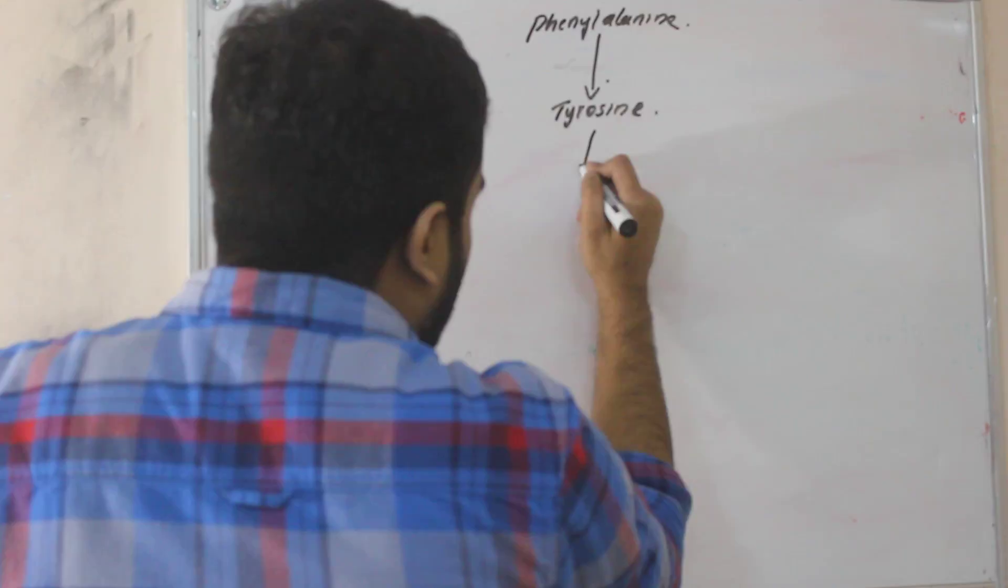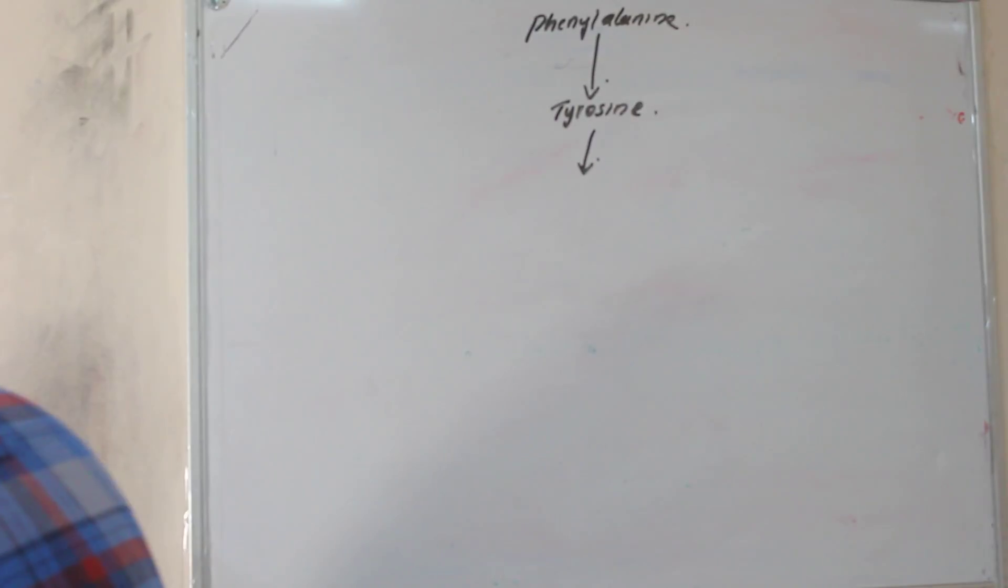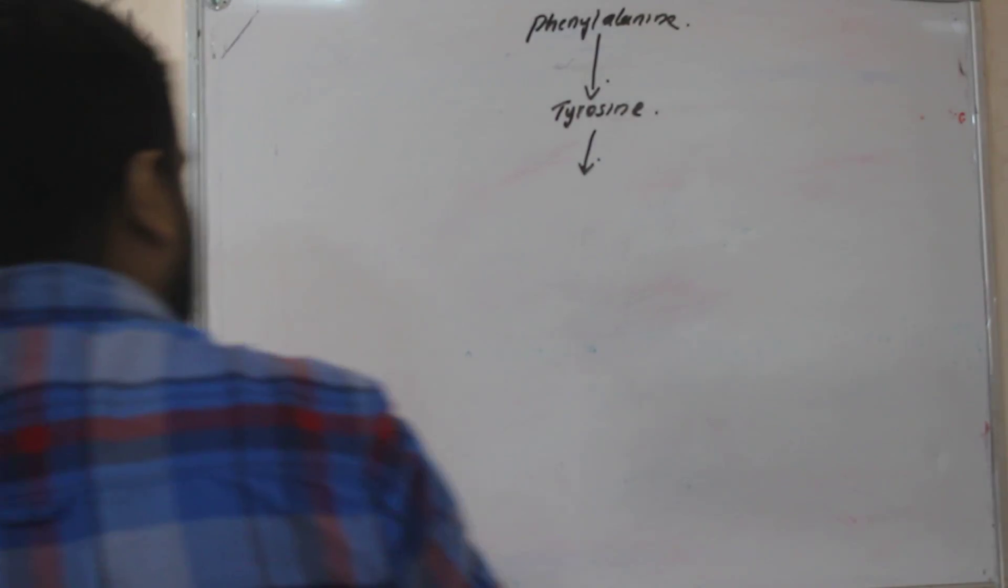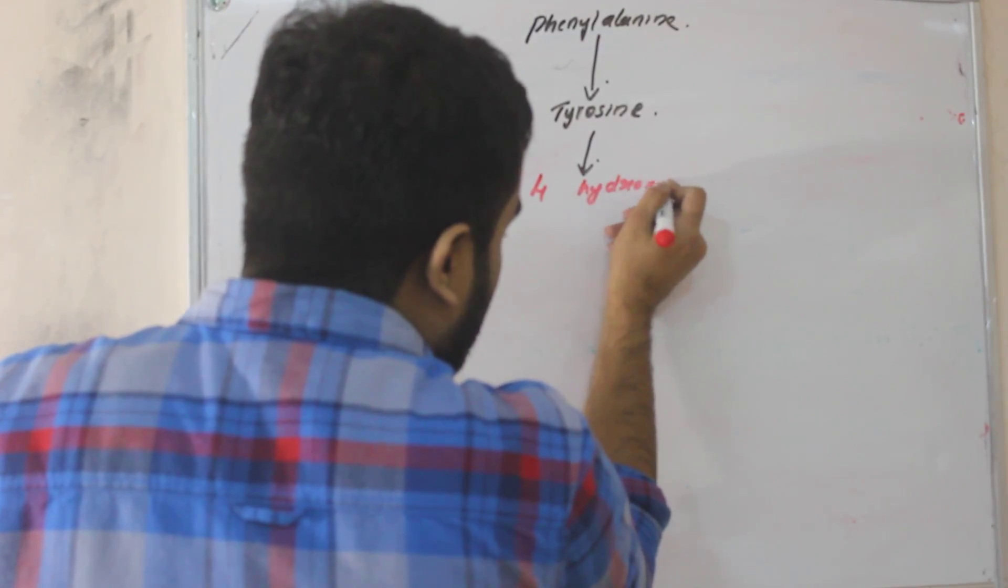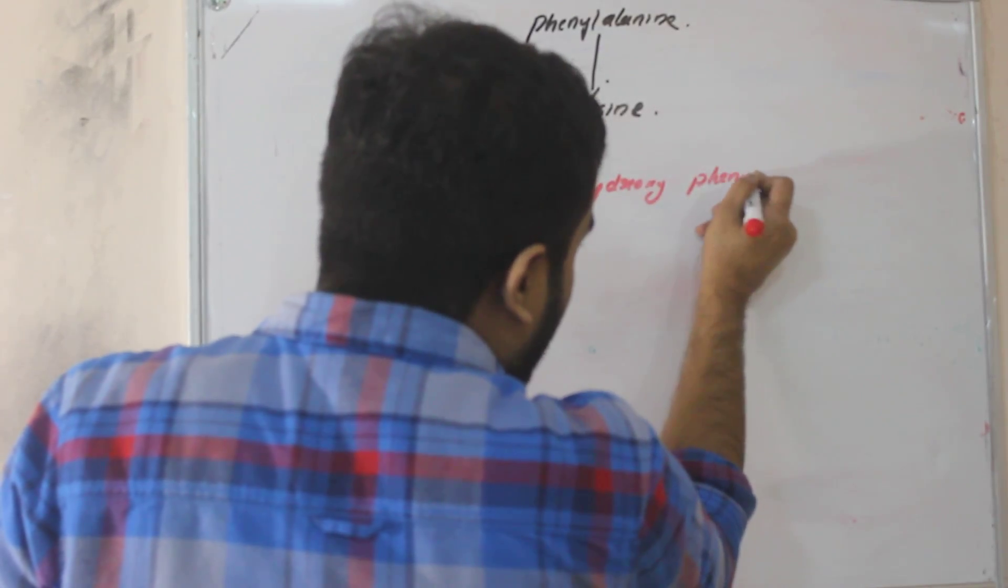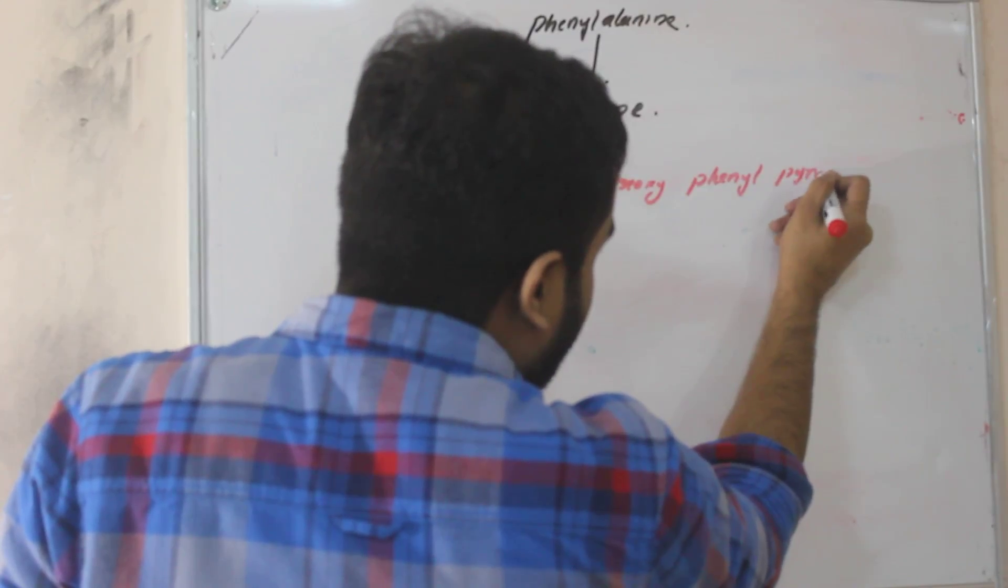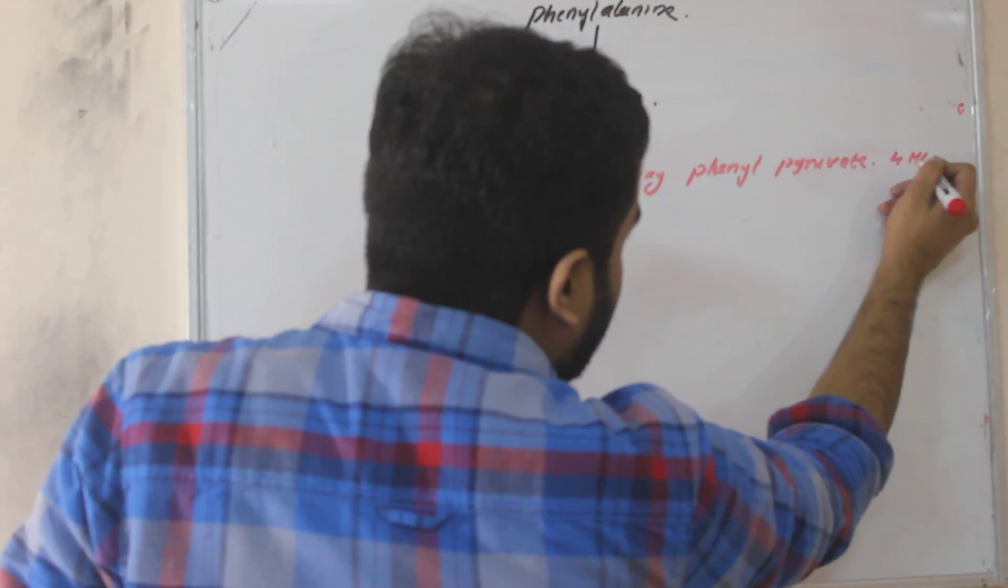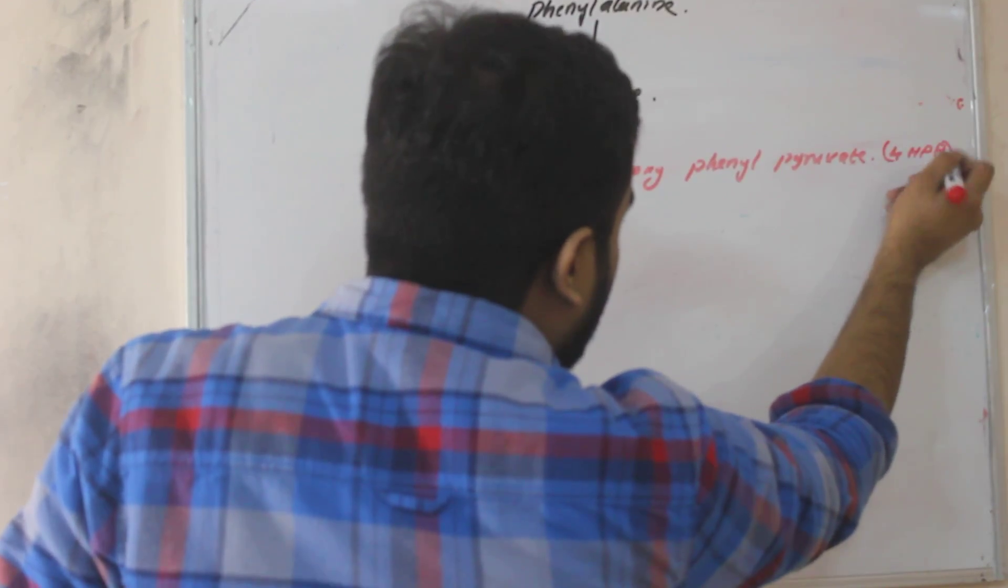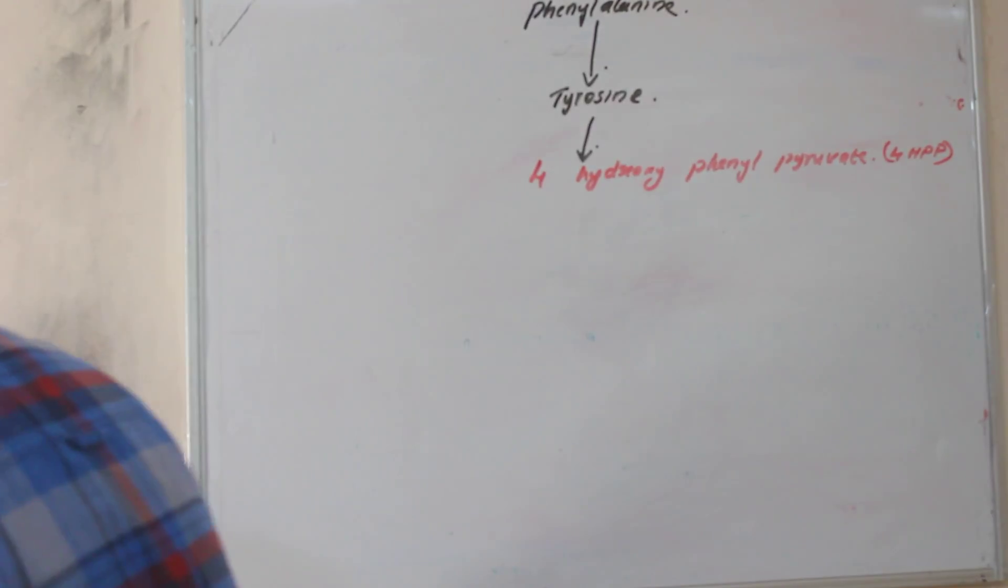This tyrosine will form an important hormone, very important. That is 4-hydroxyphenylpyruvate. You can call it as 4-HPP.